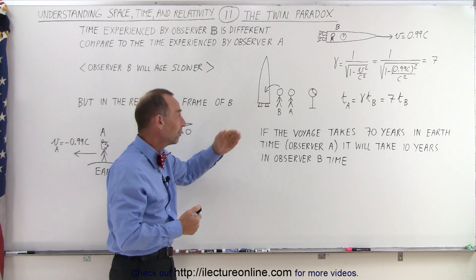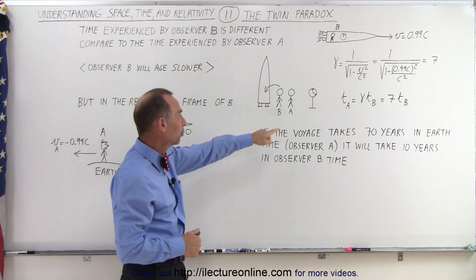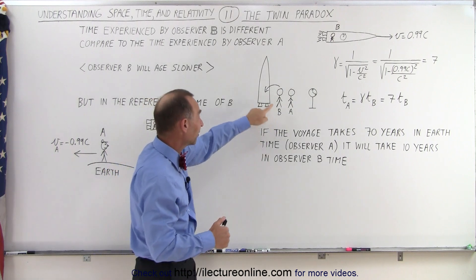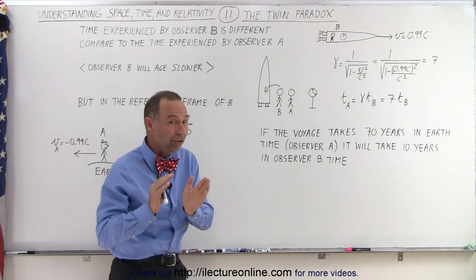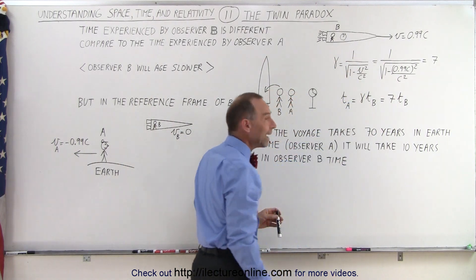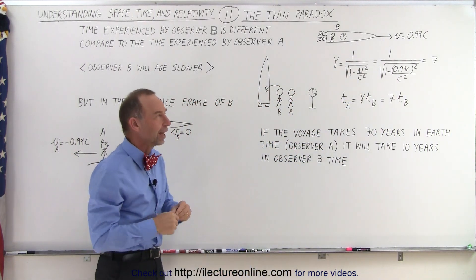For example, let's say we have two twins of the same age. Let's call them twin A and twin B. Twin A stays on the Earth and twin B gets onto a spaceship, a very special spaceship, that takes off and flies off at 0.99C, 99% of the speed of light.